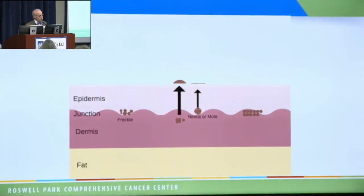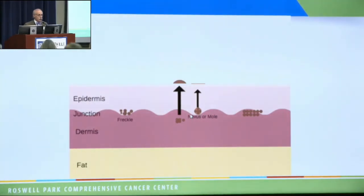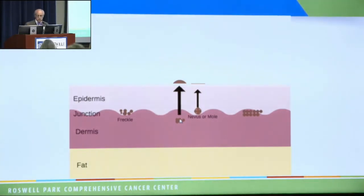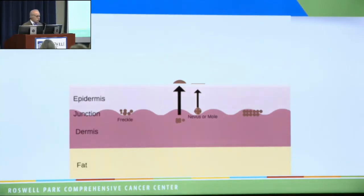At some point those cells will transform — they lose their fingers and they nest at the junction, and that's called a mole. A mole is actually a benign tumor, right at the junction. Any pigment cells only at the junction are flat on your skin. Over time those cells may migrate down into the dermis, and any melanocytes in the dermis cause a bump. So if the melanocytes are in your dermis, it's called a dermal mole. If they're at the junction, it's called a junctional mole.